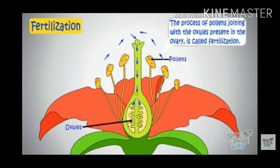So students, now I will continue the topic of fertilization. Fertilization is the process of fusion of the male gamete, which is known as pollen grain, with the female gamete, which is known as egg or ovum. Now when pollen grains fuse with ovules, they form a diploid cell known as zygote.